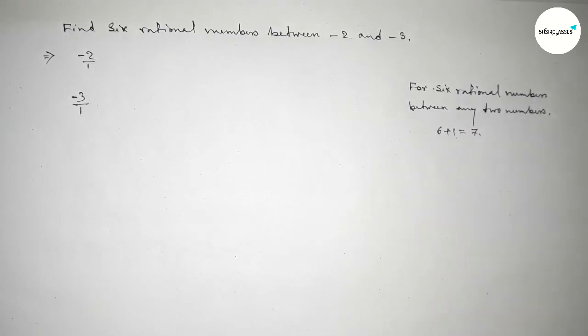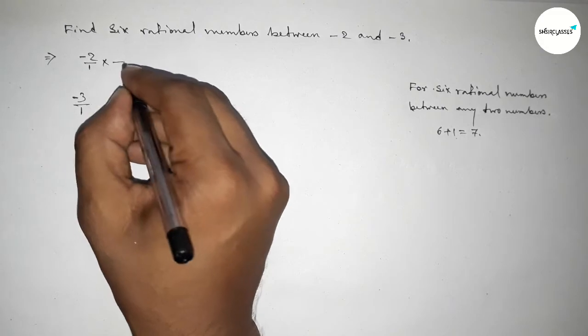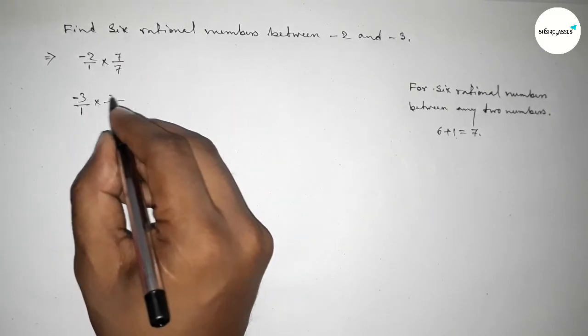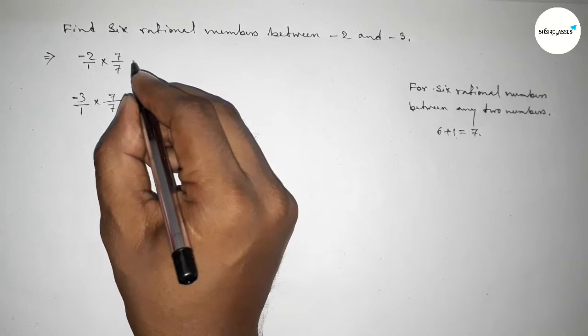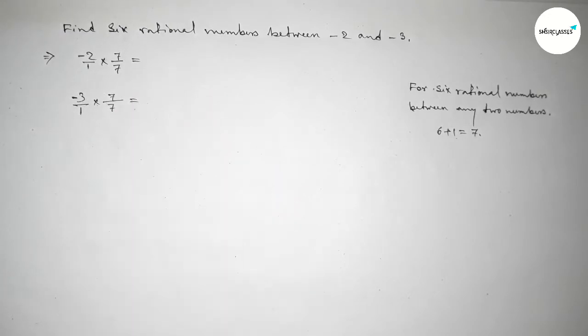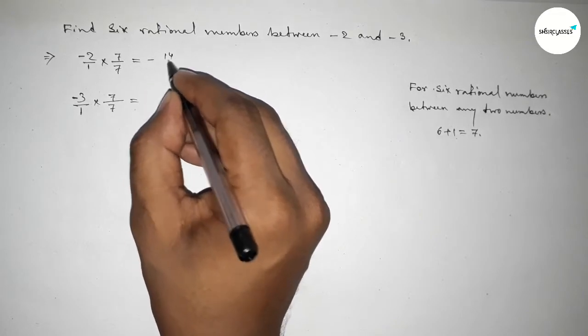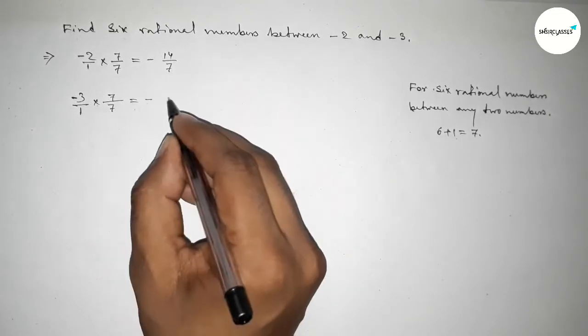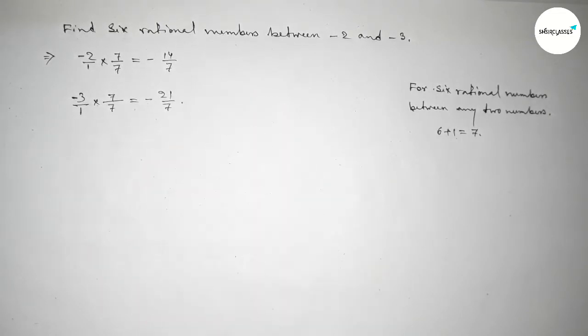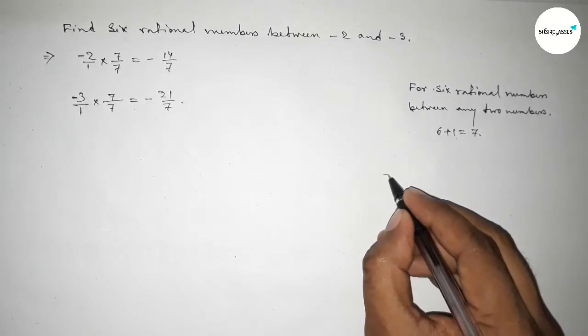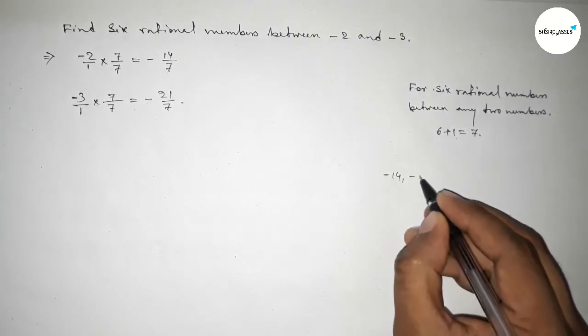So we should multiply both numbers this way, here also 7 over 7, so equal to here minus 14 over 7 and here minus 21 over 7. Now between minus 14 to minus 21 we can get six negative integers.